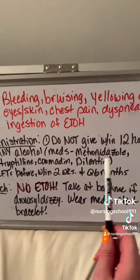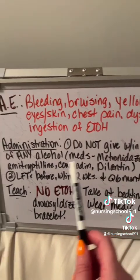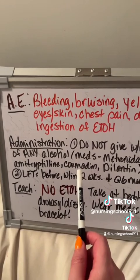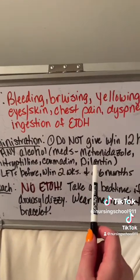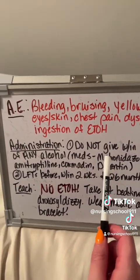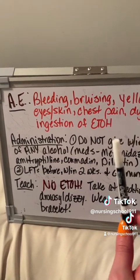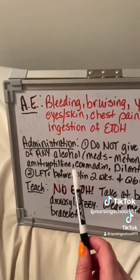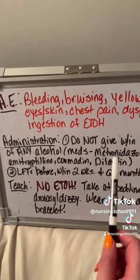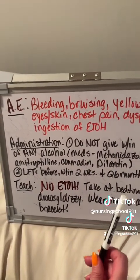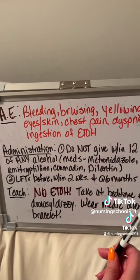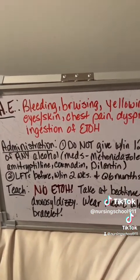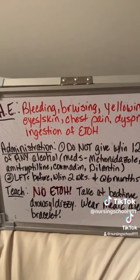Those medications are metronidazole (Flagyl), amitriptyline (Elavil), Coumadin (warfarin), and Dilantin. A neat little way to remember these four meds is 'my aunt can't drink.' Remember, those four medications cannot be taken within 12 hours of disulfiram or Antabuse.